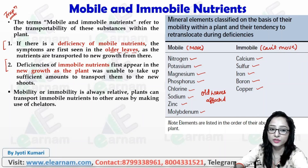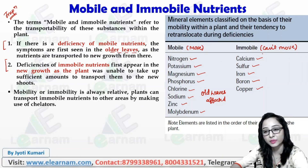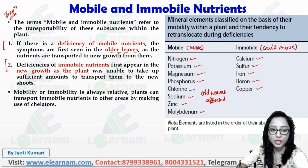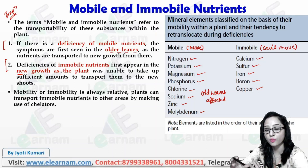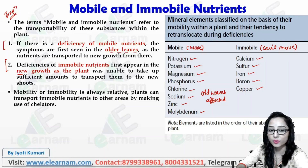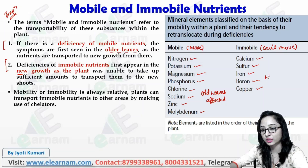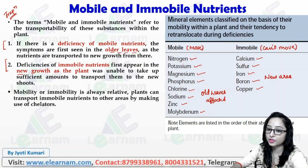If there is a deficiency in an immobile element, the first affected part is the new leaves or new growth — the newly formed part of the plant. This is because the plant was unable to take up a sufficient amount to transport them to the new shoots. In mobile element deficiency, the older areas are first affected; in immobile deficiency, the new growth is first affected.